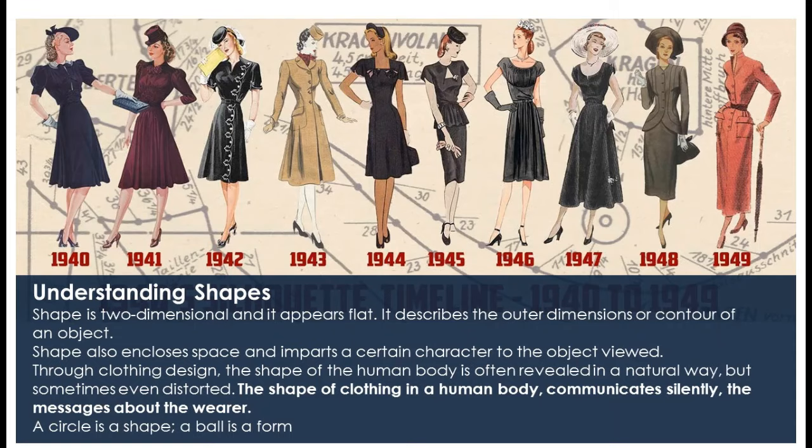Now we have to understand shape. Shape is two-dimensional and it appears flat. It describes the outer dimension or contour of an object. Shape also encloses space and imparts a certain character to the object. Through clothing design, the shape of a human body is often revealed in a natural way but sometimes even distorted. The shape of clothing on the human body communicates silently the message about the wearer. For example, a circle is a shape but a ball is a form.